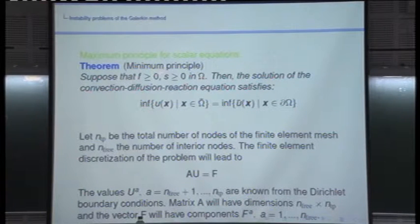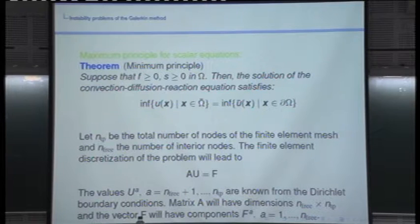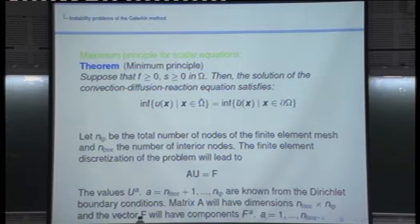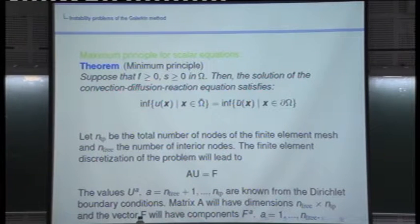Recall the maximum or minimum principle: suppose we have a non-negative right-hand side and S is non-negative. Then the minimum of the solution in the whole domain omega-bar equals the minimum of the boundary data. So if F is positive, the minimum is attained on the boundary — that's the minimum principle. If S equals zero and F is non-positive, the maximum principle holds. Remember that S cannot be negative; otherwise you could have instabilities.